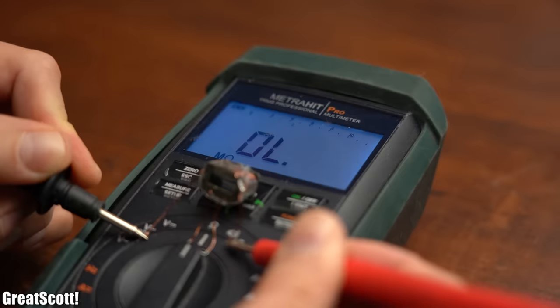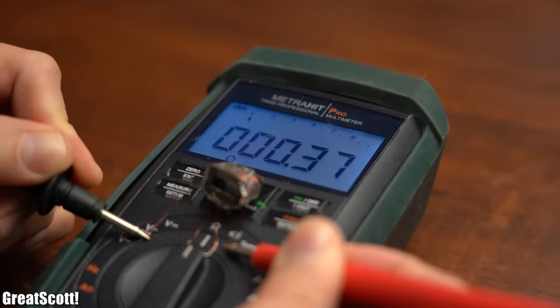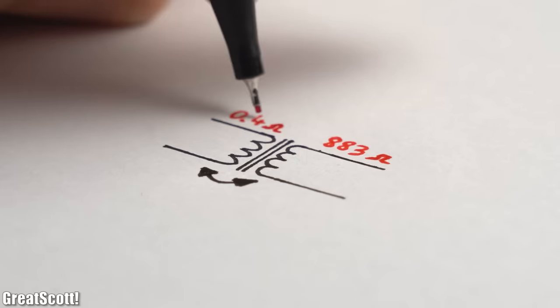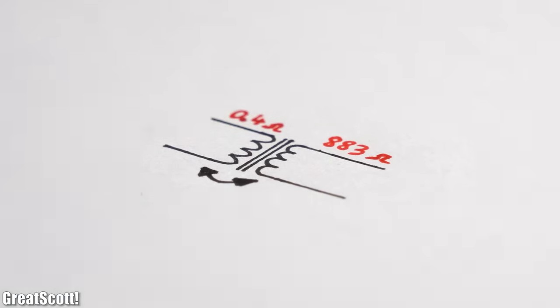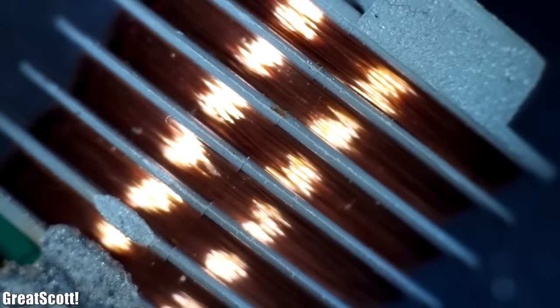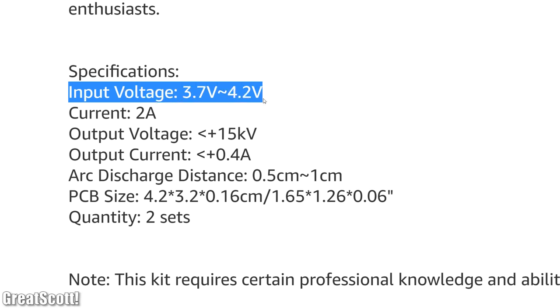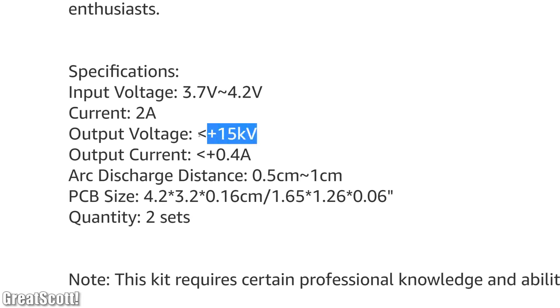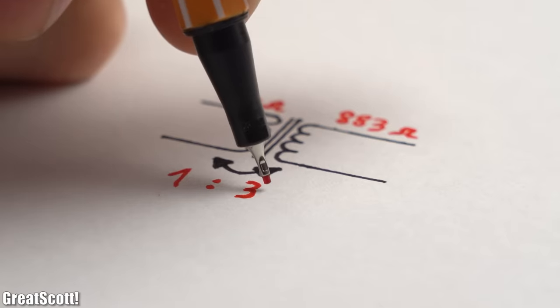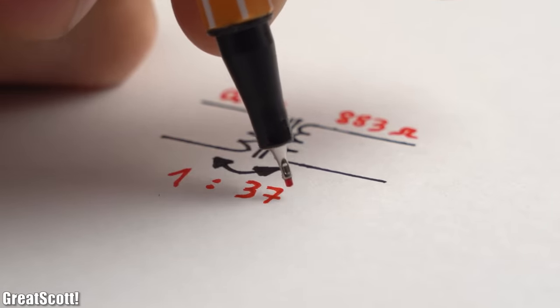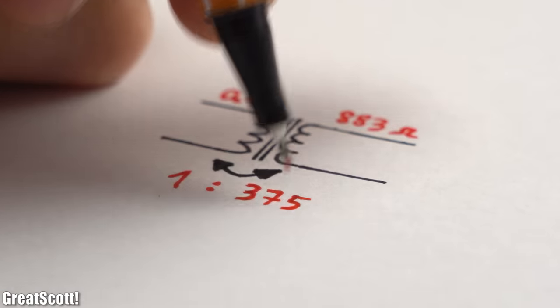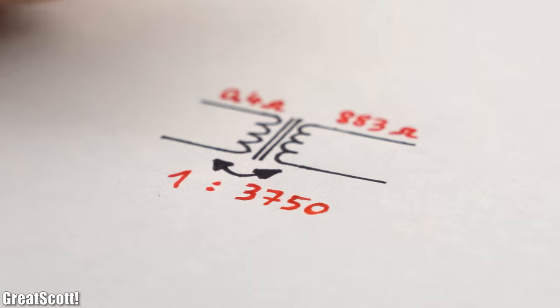But by simply measuring the resistance of those coil pairs we cannot determine the winding relation between the primary and secondary because the high voltage side uses way thinner wire. But by assuming that the circuit transforms around 4V on the input to 15,000V on the output, we can calculate an approximate relation of 1 to 3750 which is quite a bit.